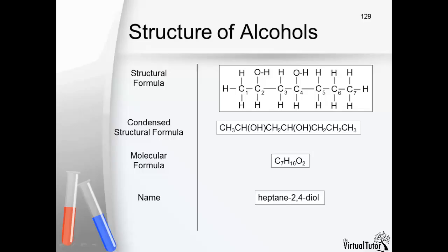We indicate the second hydroxyl group by writing the name of the parent alkane and adding diol at the end. If there are three hydroxyl groups, the name will end in triol.